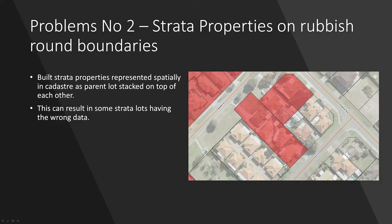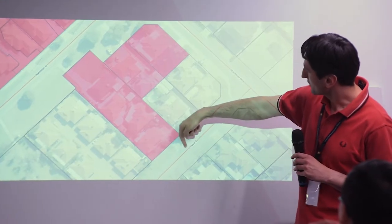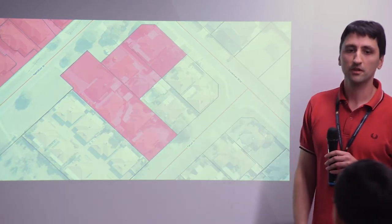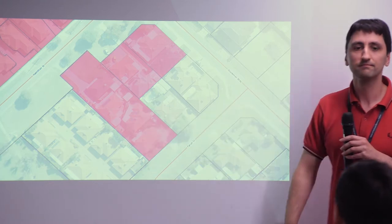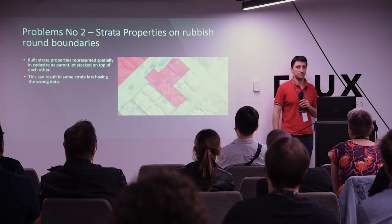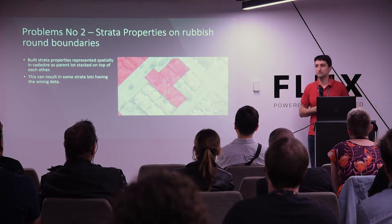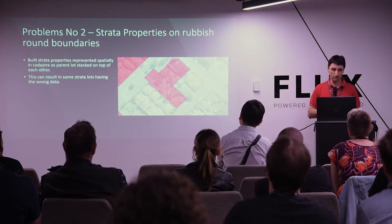The next problem was strata properties on the boundaries of some of these rubbish rounds. You look at a site with four properties — two facing onto one road, two facing onto another — and they all show up in the same rubbish round when they shouldn't be. The problem is if someone goes on our website and searches for when their rubbish gets picked up, they're going to get the wrong data.